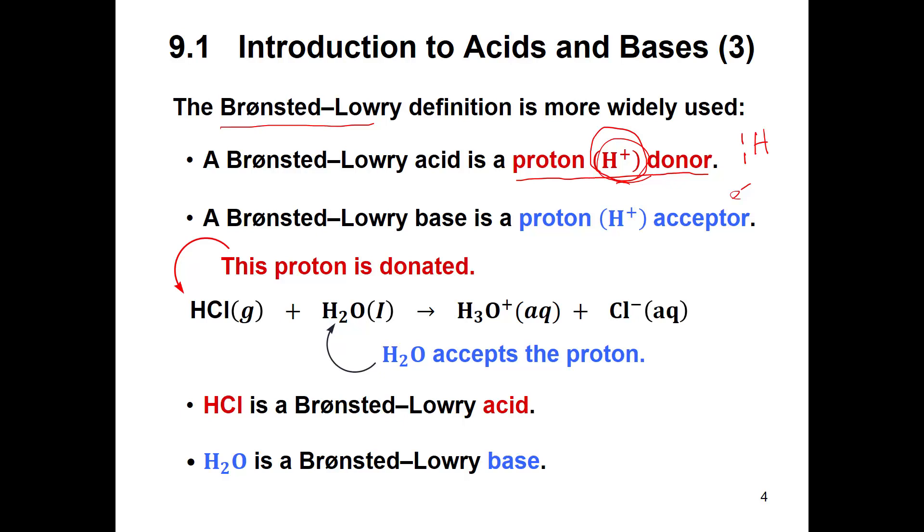Bronsted-Lowry says that an acid is a proton donor or an H+ donor, and a Bronsted-Lowry base is a proton acceptor. In the acid and water reaction, water accepts a proton and the acid donates the proton. So this H goes to the water molecule forming the H3O+, the hydronium ion, and then you're left with your chloride ion as well.